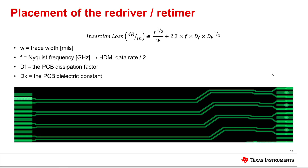The placement of the redriver and retimer is a critical decision in a system design. Placing the redriver or retimer either too close or too far from the source transmitter or sync receiver will negate the effectiveness of the signal conditioner, resulting in less than optimal system performance. The placement of the redriver depends on the total insertion loss of the system before the receiver equalizer. The insertion loss comes from the PCB trace, the via, the connector, the silicon package, etc. The next few slides will build off the previous TI Precision Labs' What is DisplayPort presentation. Please review it for additional information and examples.